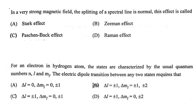In a very strong magnetic field, the splitting of a spectral line is normal — this effect is called the Paschen-Back effect. For an electron in a hydrogen atom, the electric dipole transition selection rules require Δl = ±1 and Δml = 0, ±1.